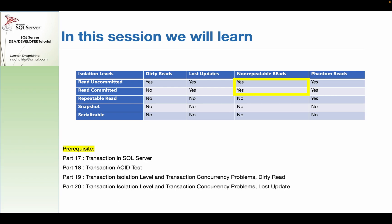Non-repeatable reads occur under read committed and read uncommitted isolation levels. To prevent them, you need to use repeatable read, snapshot, or serializable isolation levels.